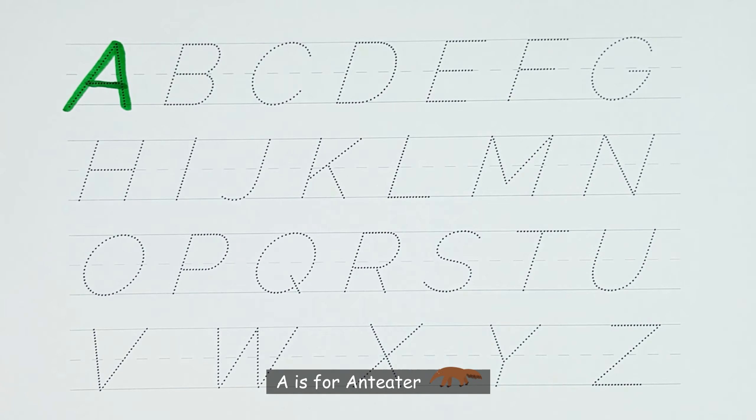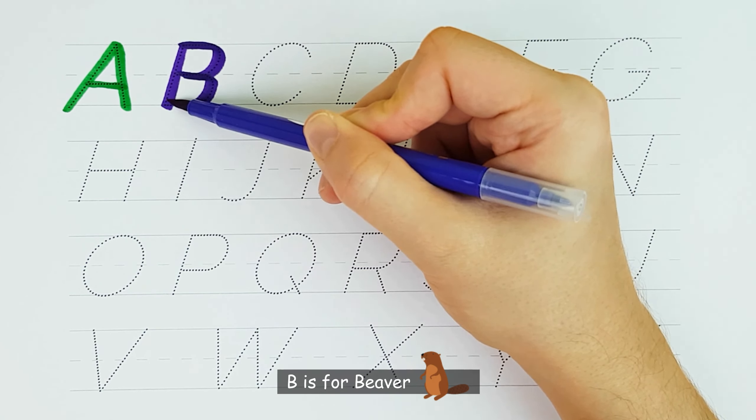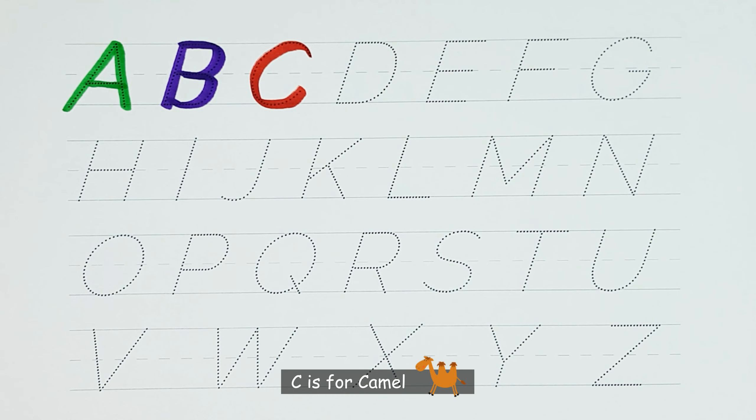A. A is for Anteater. B. B is for Beaver. C. C is for Camel.